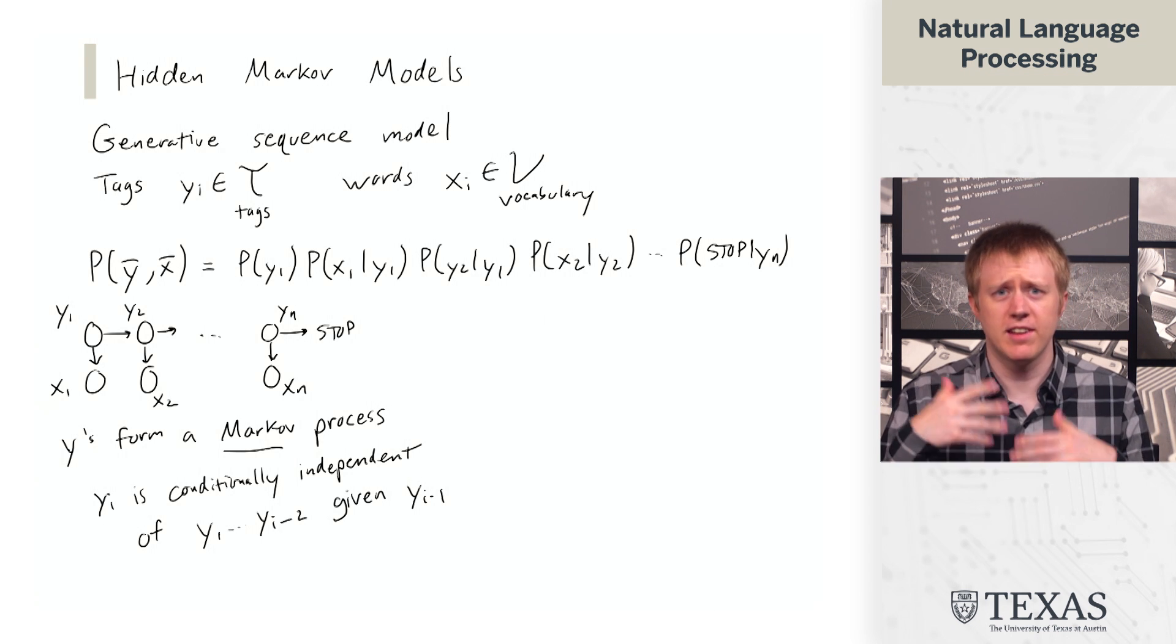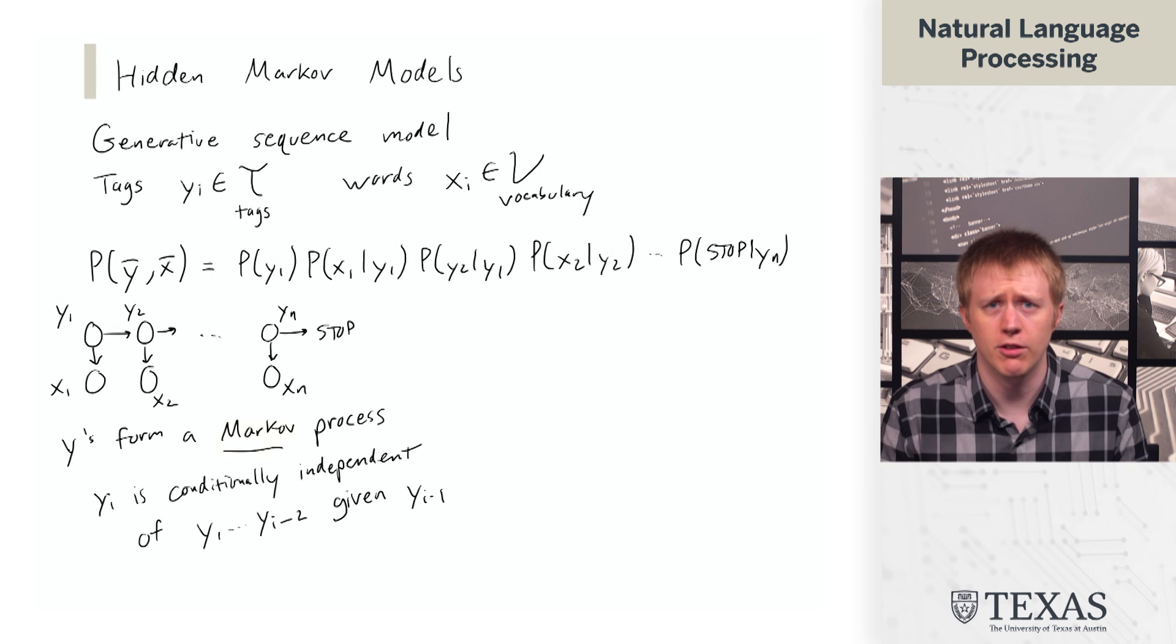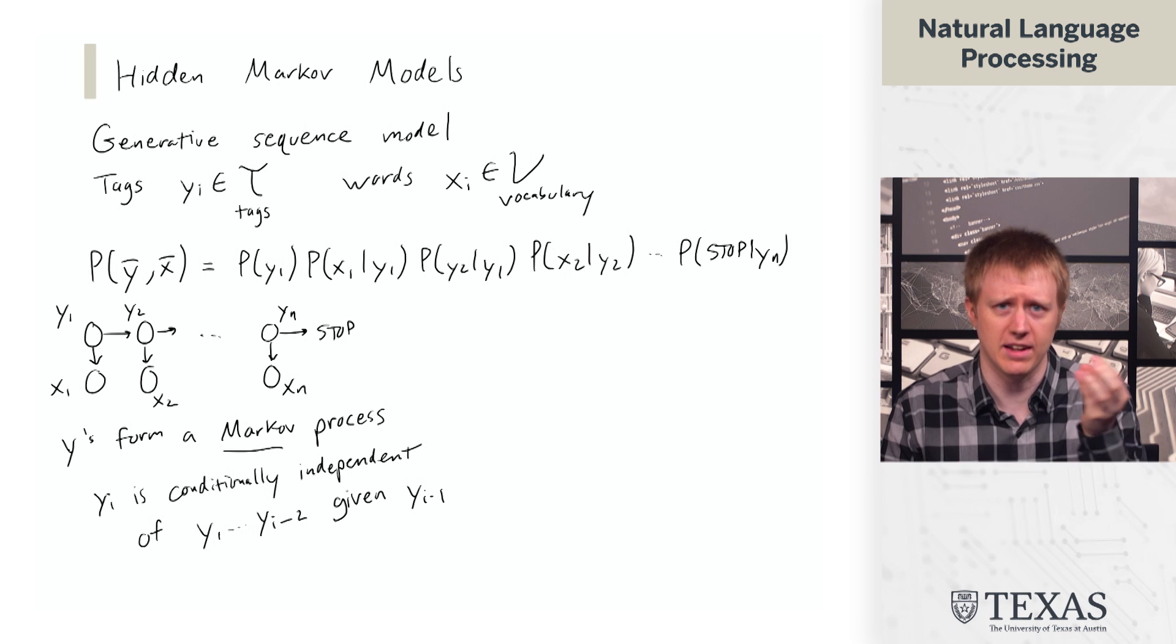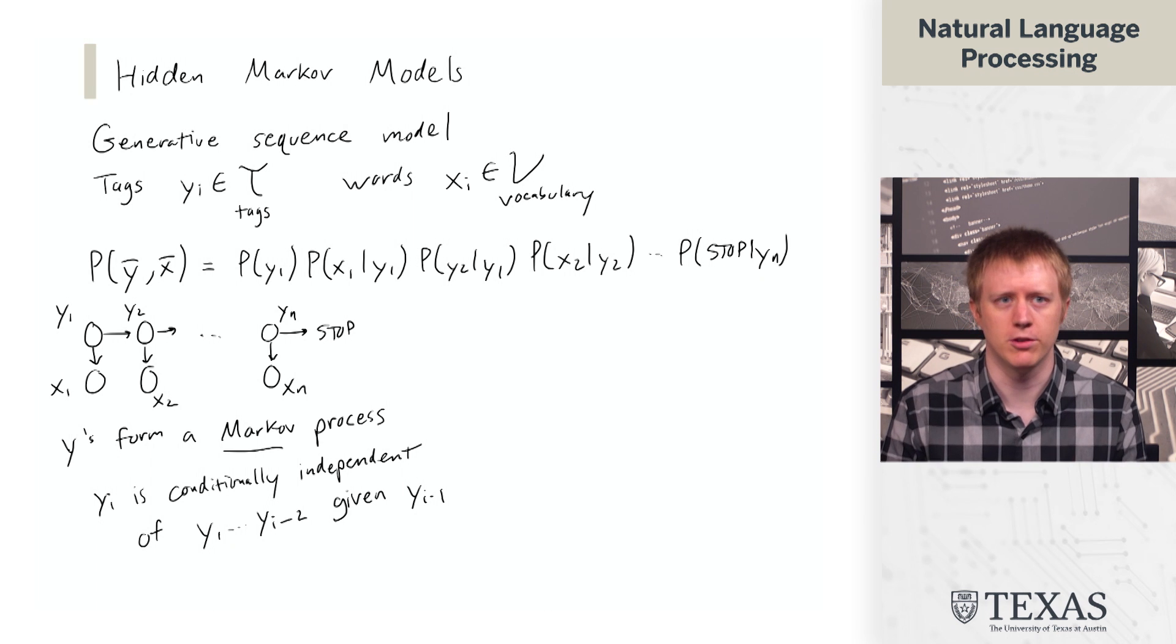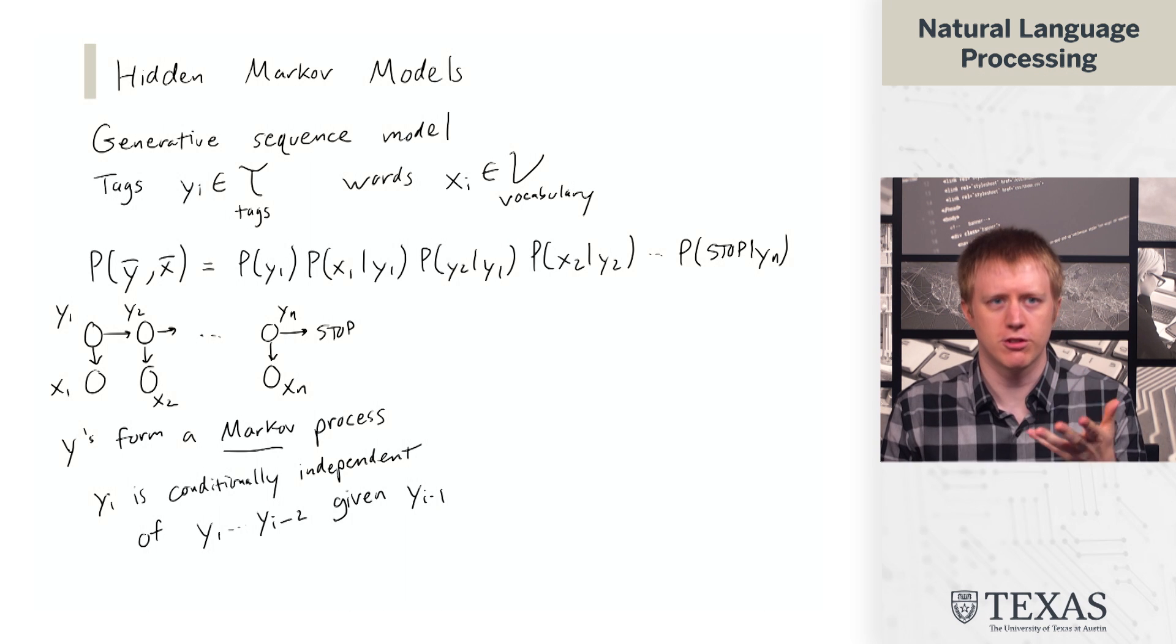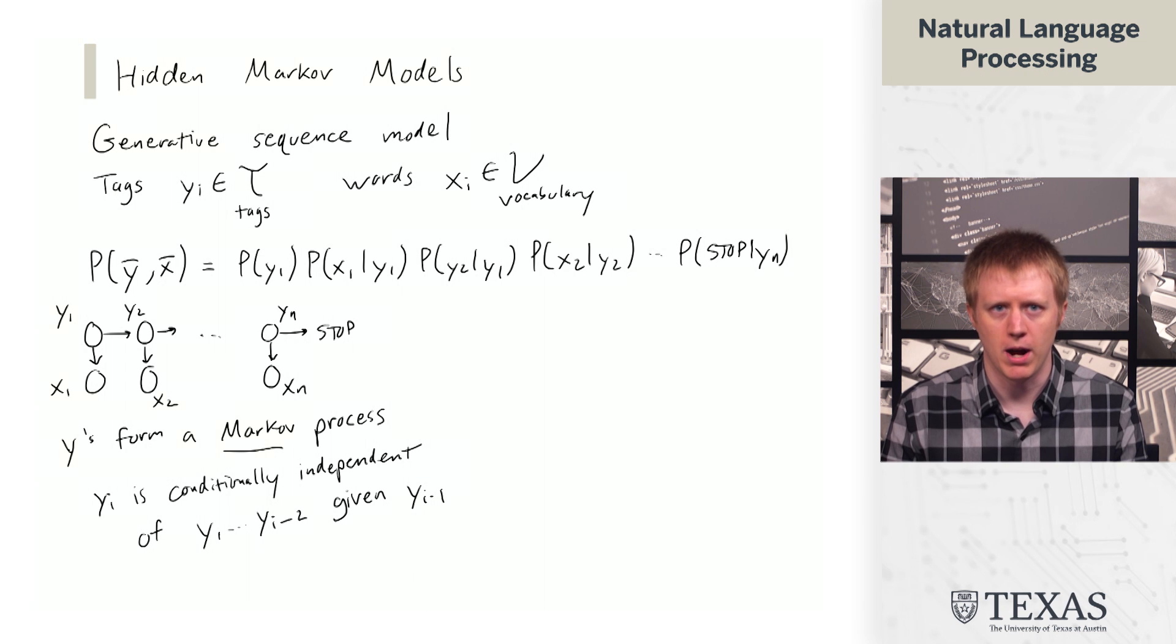So it's not right to say that it's completely independent of the earlier states in the process, because the earlier states in the process influence what yi minus 1 is. But if we know what yi minus 1 is, then that fully determines the distribution over yi.